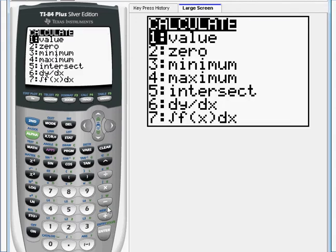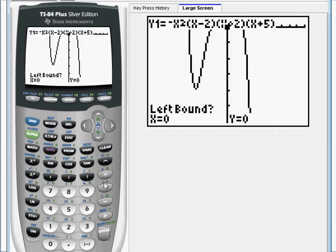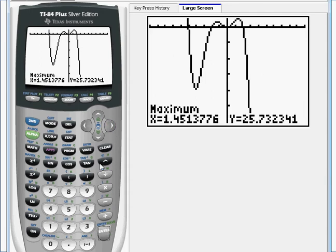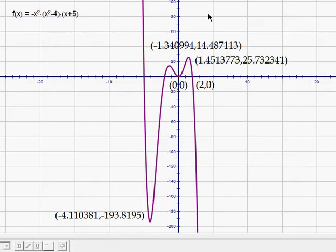And then lastly, I want to have this max over here. So that's enter. And then there's our last one. So I'm going to write this in on the paper. Okay, so here's a sketch of our function here. So we have a maximum at negative 1.34, another maximum at 1.45, a min at the origin, and then a min down here in the third quadrant at negative 4.11.